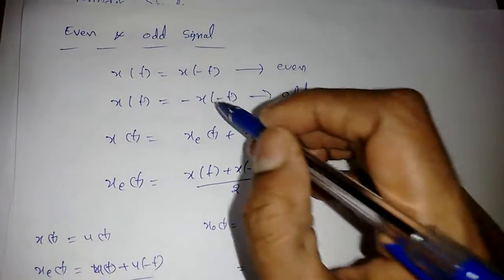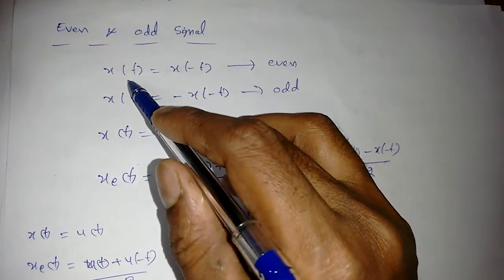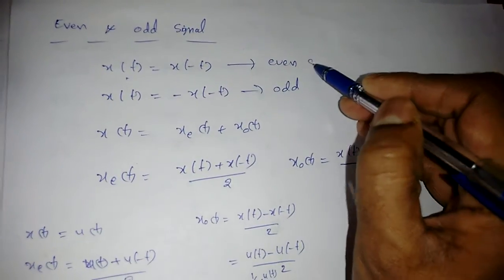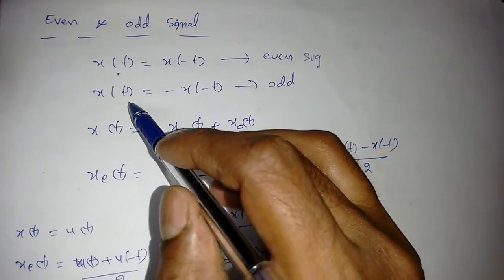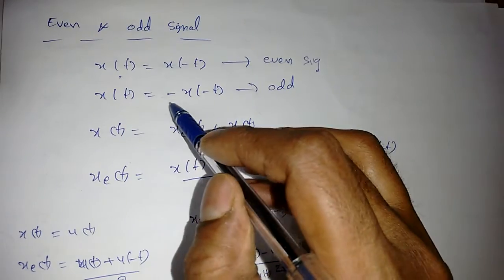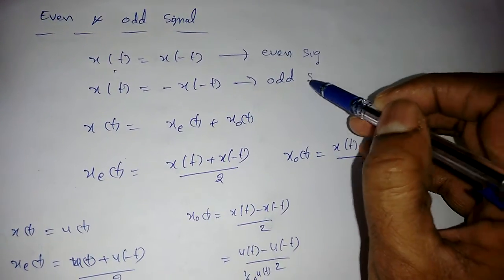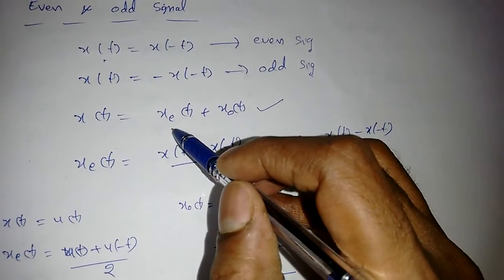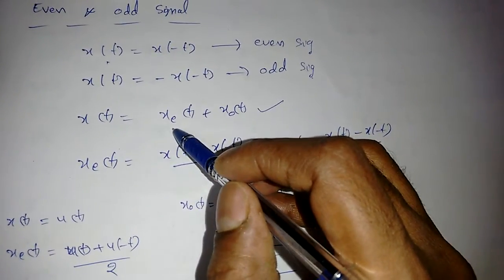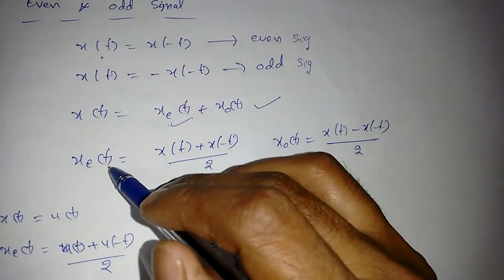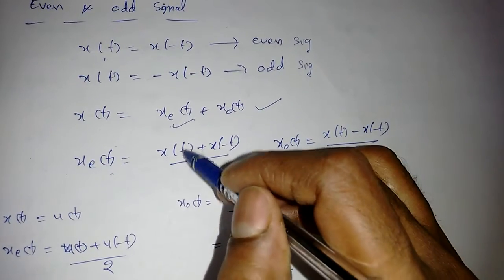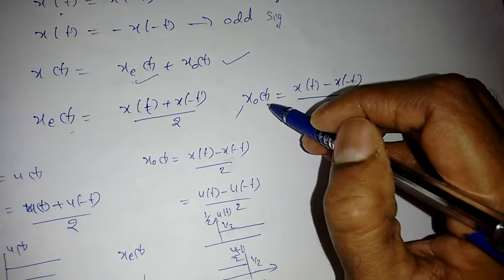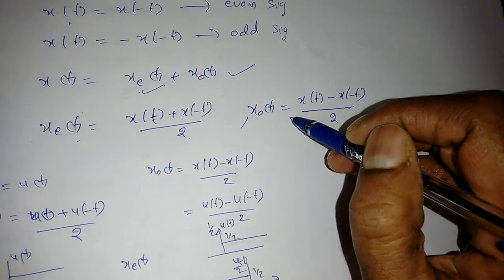Next are even and odd signals. A signal is even if x(t) equals x(-t). A signal is odd if x(t) equals minus x(-t). Any signal x(t) can be written as the sum of an even part and an odd part. The even part is [x(t) + x(-t)] / 2.